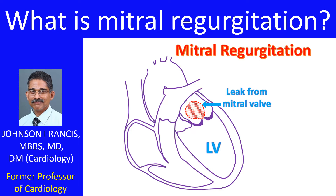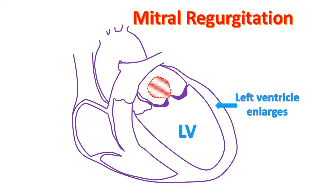The blood which leaks into the left atrium returns back into the left ventricle when it relaxes after a contraction. This increases the load on the left ventricle as it has to contract more forcefully. The volume overloaded left ventricle enlarges and its muscle becomes thickened gradually to cope with the increased workload.